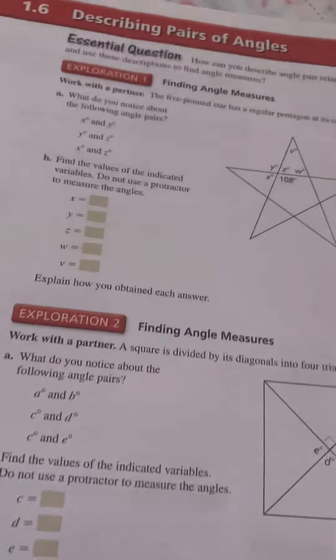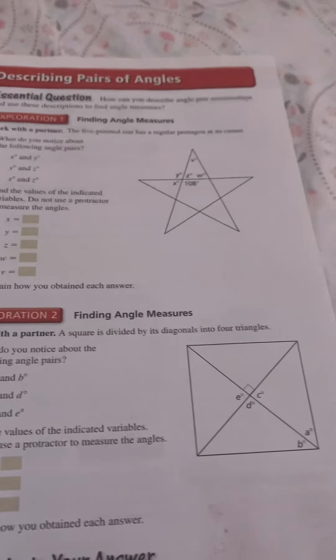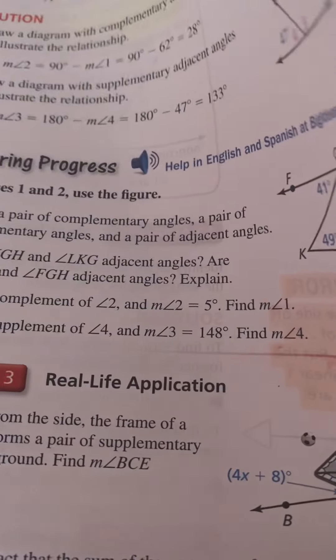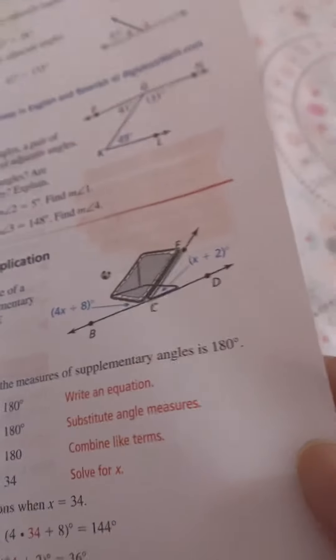1.6 Describing Pairs of Angles: Attending to Precision. To be proficient in math, you need to communicate precisely with others. Common error: In example one, angle DAC and DAB share a common vertex and a common side, but they also share common interior points, so they are not adjacent angles. Common error: Do not confuse angle names with angle measures.